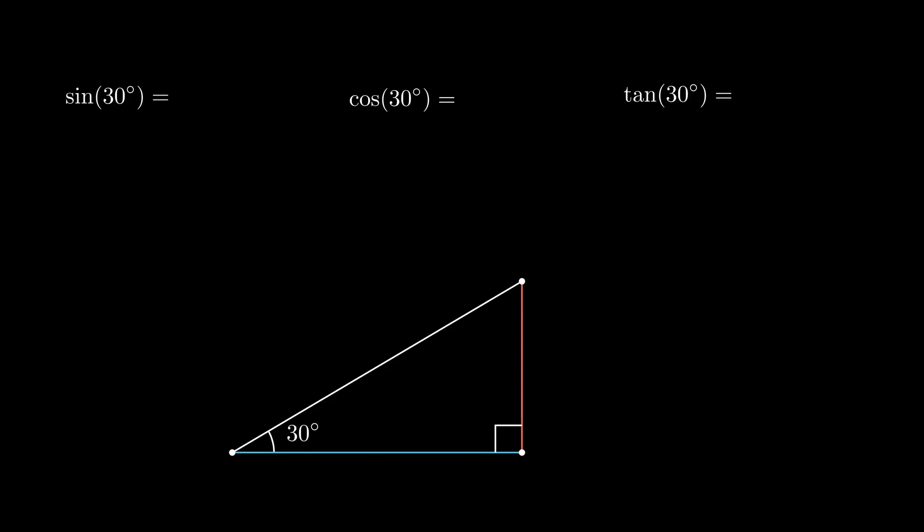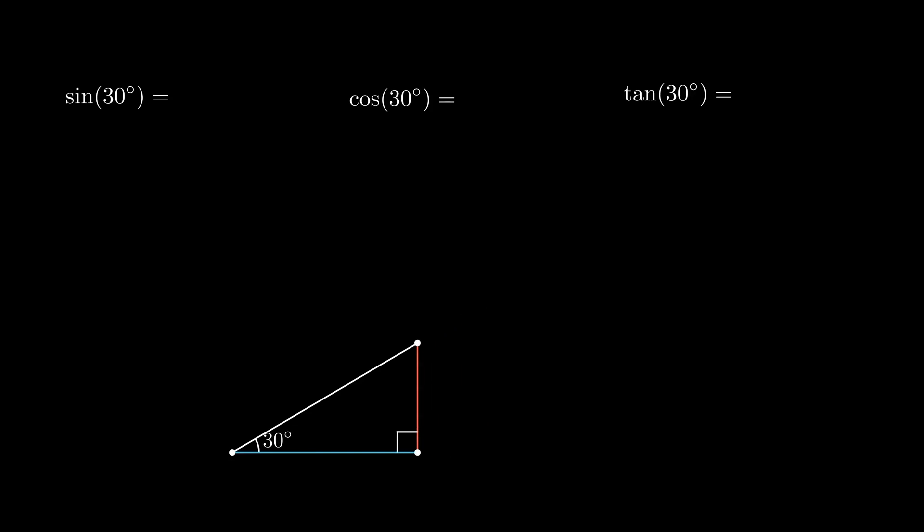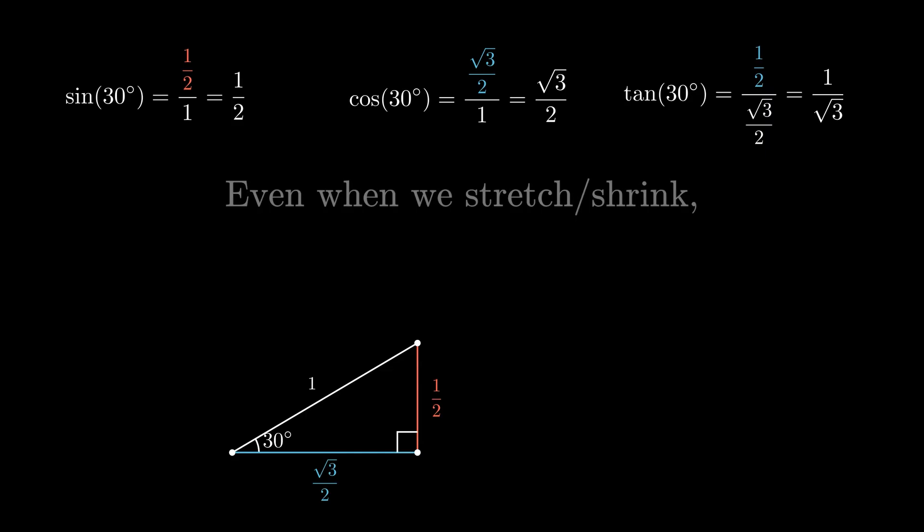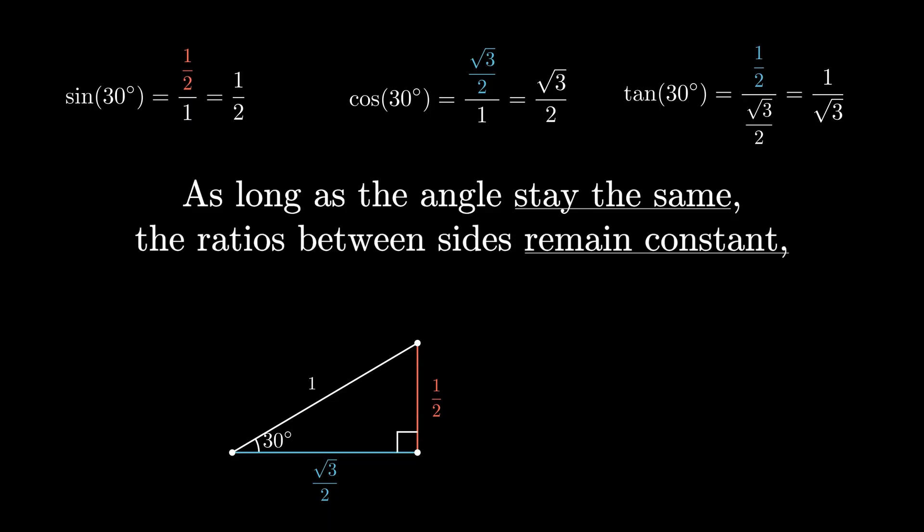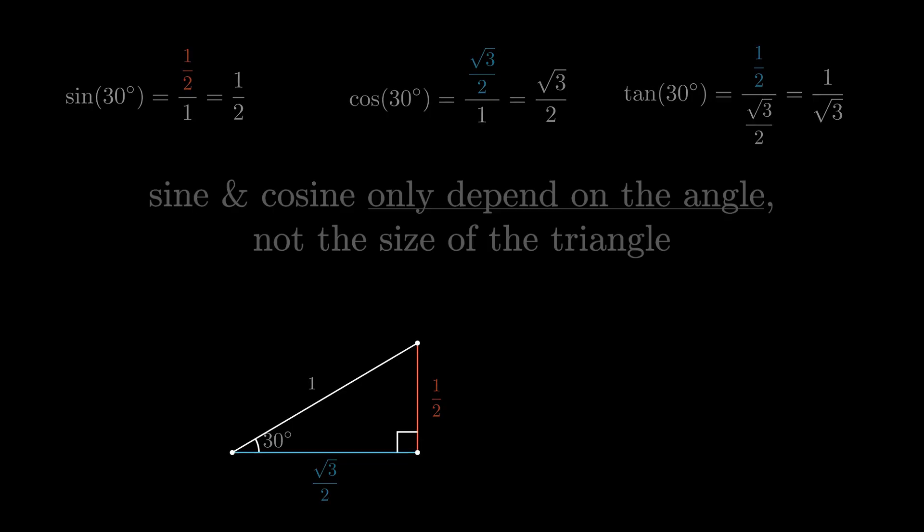If we stretch this triangle, let's say the hypotenuse equals 4, sine and cosine becomes 2 over 4 and 2 root 3 over 4, values exactly the same with the original triangle. Now if we shrink the triangle, let's say the hypotenuse equals 1, again the values are exactly the same. So even when we stretch or shrink the triangle, as long as the angle stays the same, the ratios between sides remain constant, meaning all such triangles are similar. So sine and cosine only depend on the angle, not the size of the triangle.